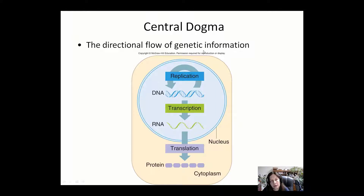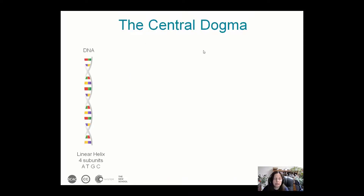Replication and transcription occur in the nucleus of the cell, while translation occurs in the cytoplasm outside of the nucleus. When RNA is synthesized, it has to be edited, and then it exits the nucleus where it gets translated into protein. This is the flow of genetic information — the central dogma of molecular biology.